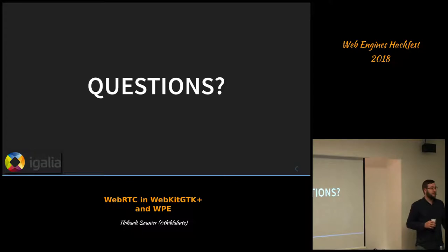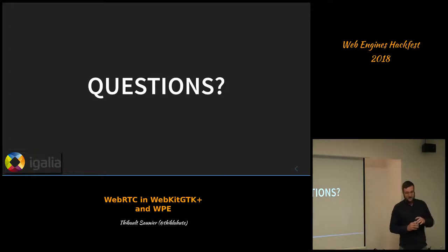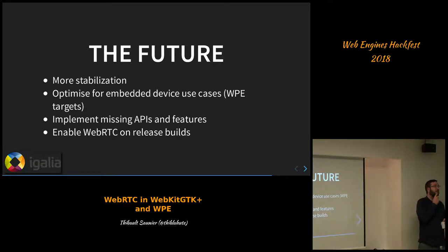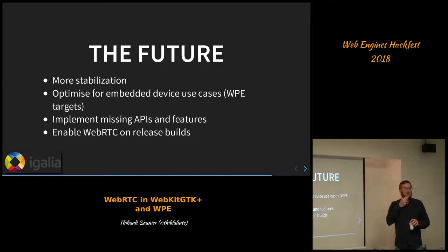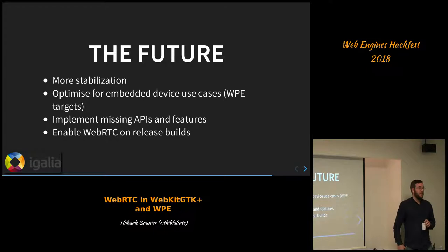Any questions? — Is Safari going to support this as well? Yes, it is. — Can you go back to the first slide? You mentioned optimizing for devices — which codecs are you using? Well, the ones that have hardware acceleration on the platforms that exist. On Raspberry Pi it will be H.264 only because there is no encoder for VP8/VP9 there. But on other platforms it might be different — it's dependent on the platform.